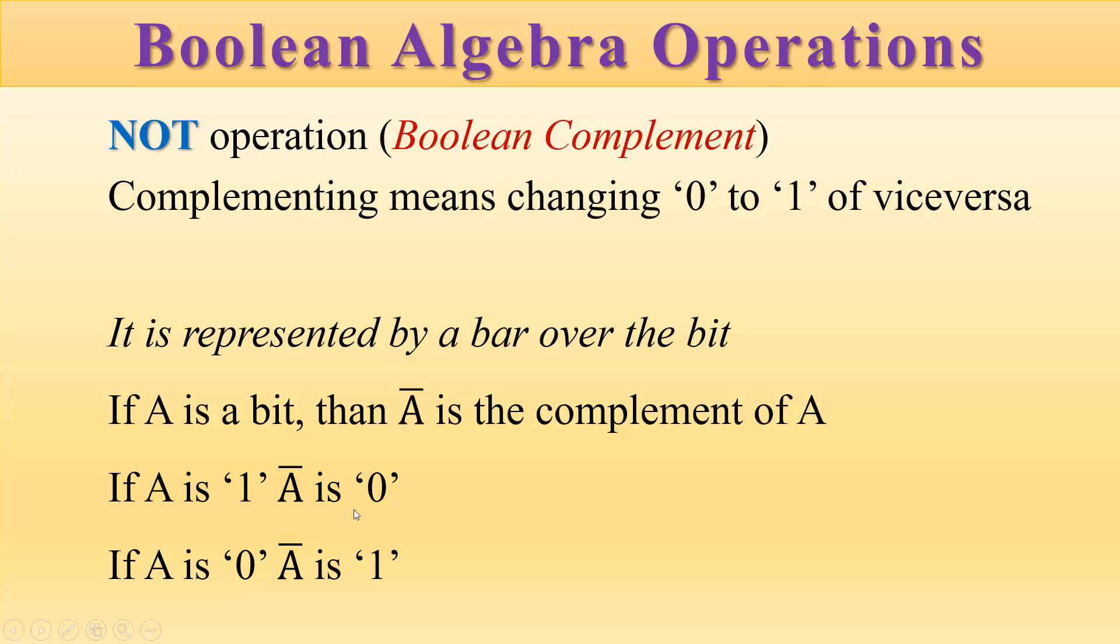In the NOT operation, 0 changes to 1 and 1 changes to 0. It is called the complement operation in Boolean algebra. We have discussed the three basic operations of Boolean algebra: AND, OR, and NOT. That brings us to the end of this discussion.